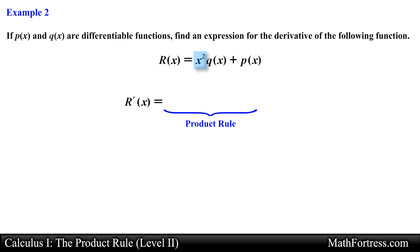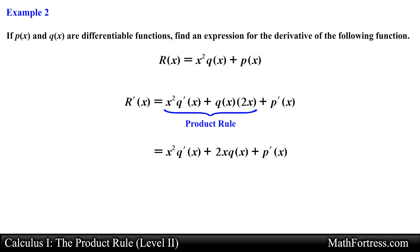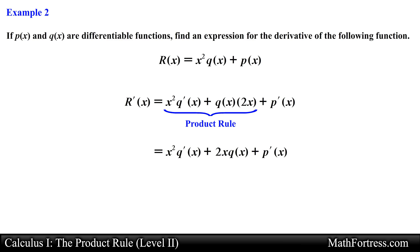We assign x squared as the first function and q as the second function. Applying the product rule we obtain x squared times q' plus 2x times q. Next we move along to the second term. The derivative of the second term is just going to be equal to p'. Rearranging the expressions we obtain the final derivative equal to x squared times q' plus 2x times q plus p'. This expression represents the derivative of r in terms of q and p.